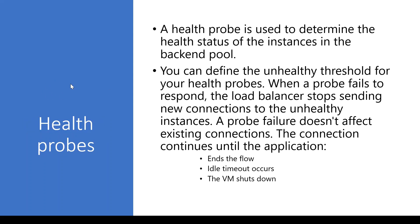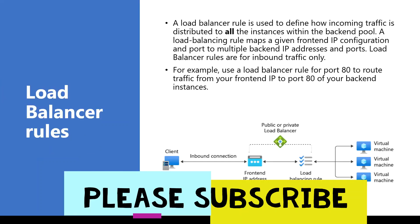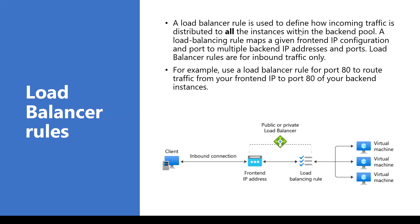The next key component is the health probe. The load balancer keeps checking if all machines in the backend pool are healthy, and if it finds any machine is unhealthy, it will not send traffic to that machine. The next key component is load balancer rules, used to define how incoming traffic is distributed to the backend pool. We define the ports of the frontend and backend IP configuration — in this video I'll use the default port 80, but you can use a different port.